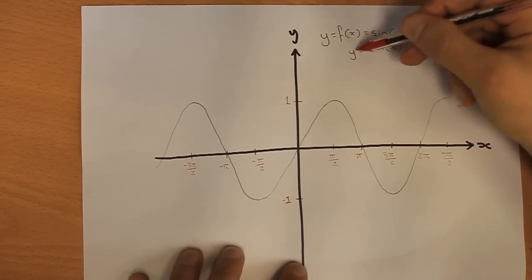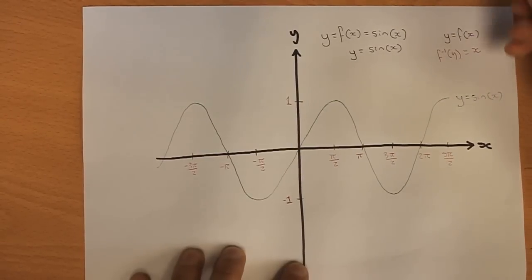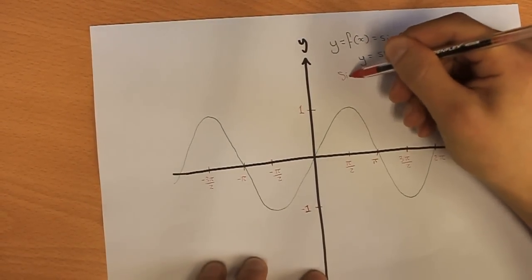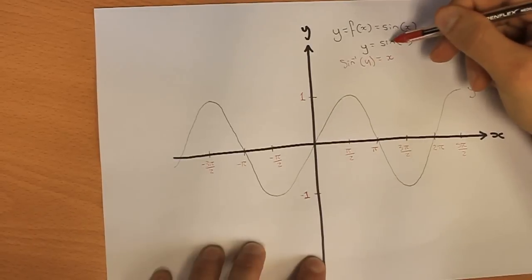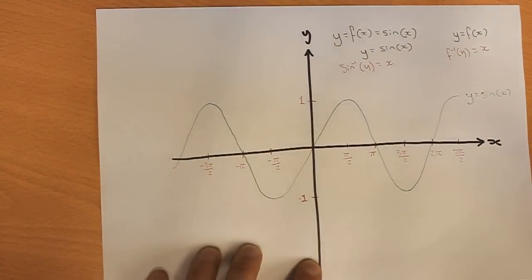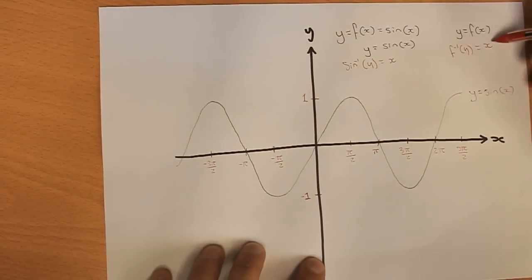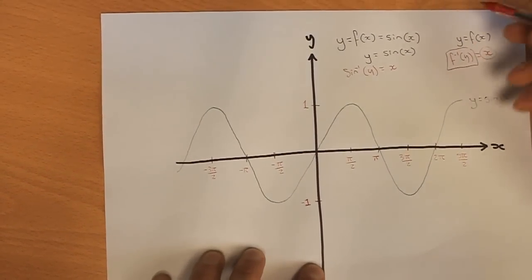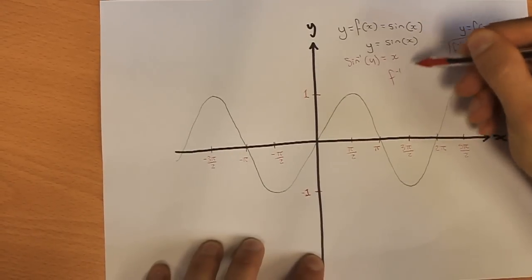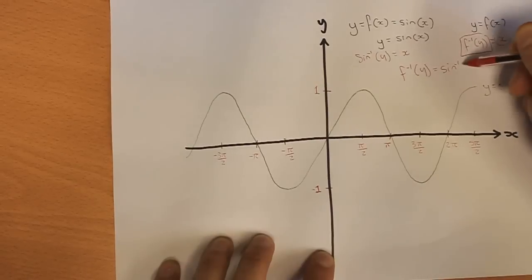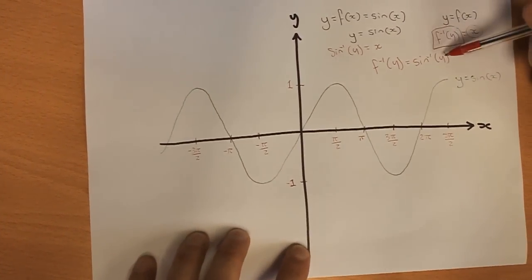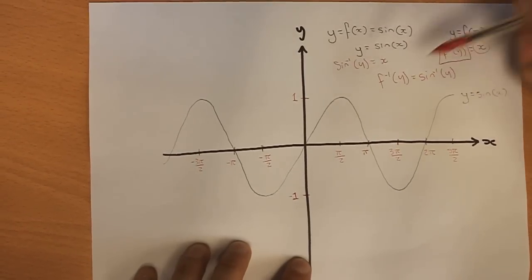If we apply the inverse to our equation y equals sine x, we do sine to minus 1 of both sides, so we get sine to minus 1 of x because sine to minus 1 and sine are inverses. We just said that x was going to be our f to minus 1 of y, so we get that our inverse is sine to minus 1 of y. That's because we're going from our answer back to our original thing.